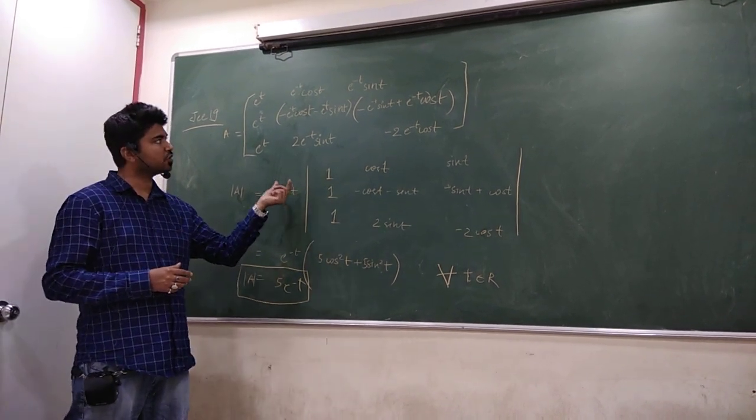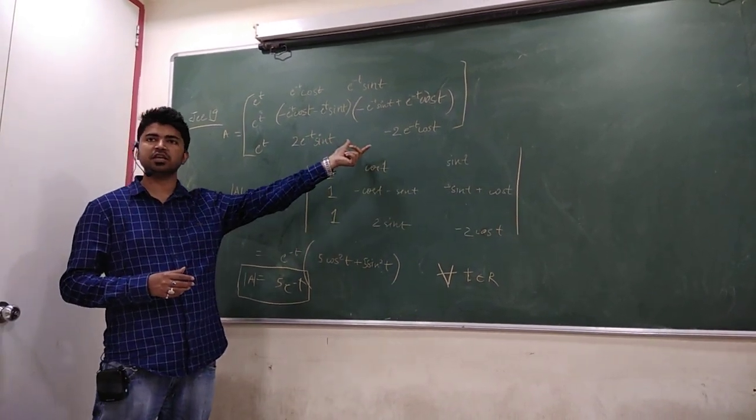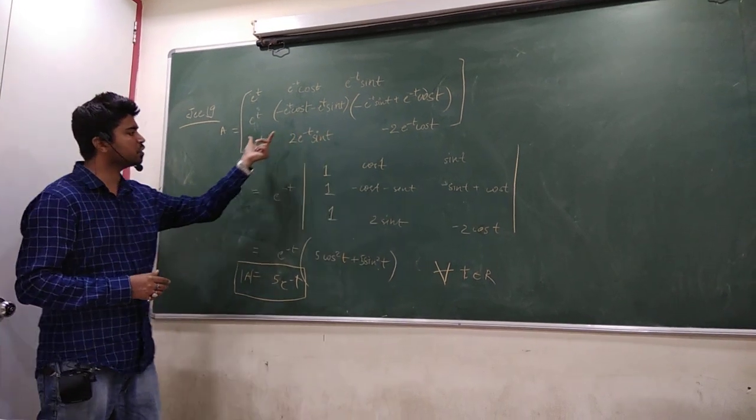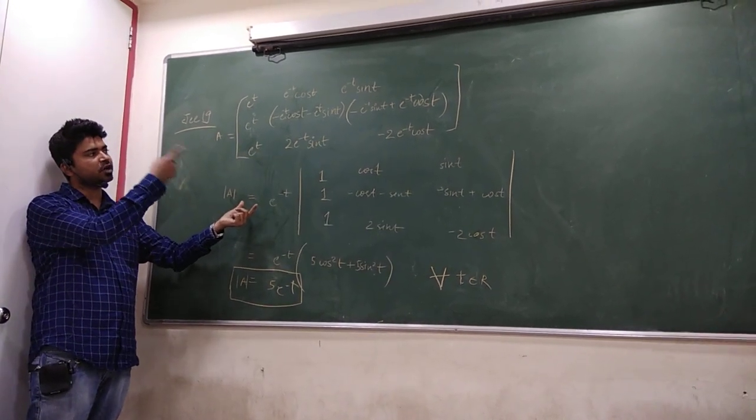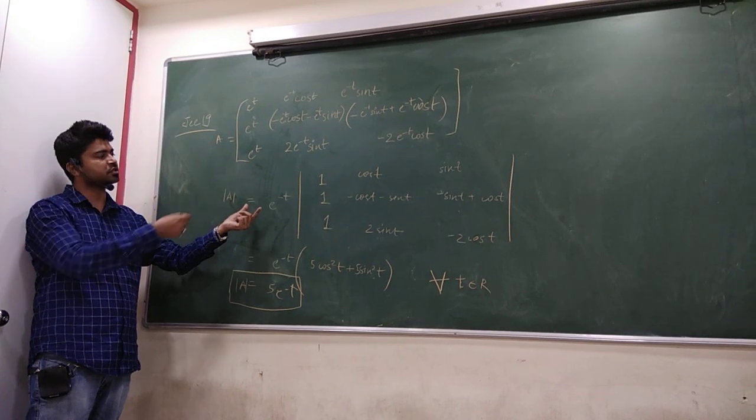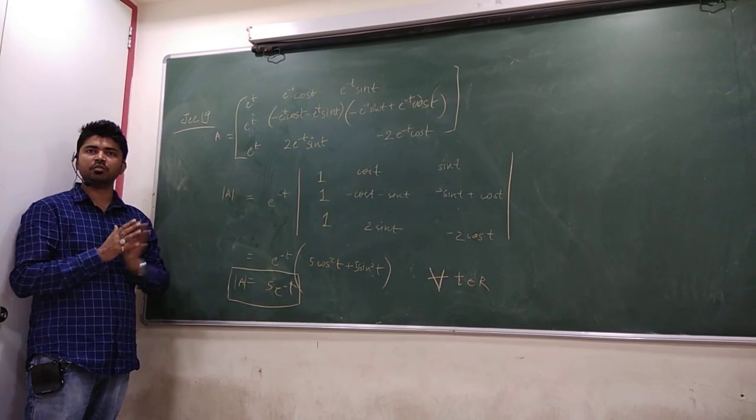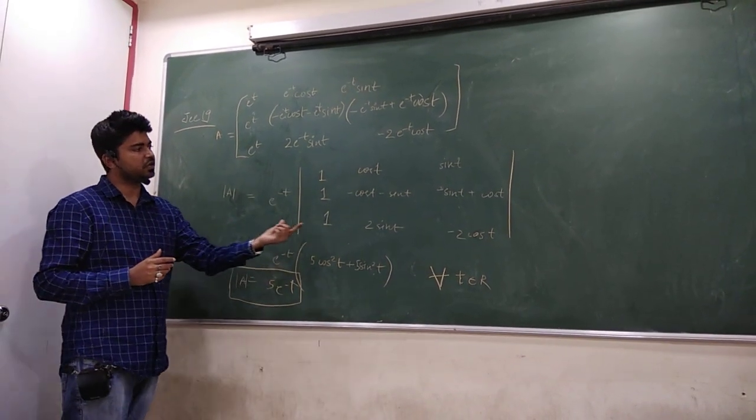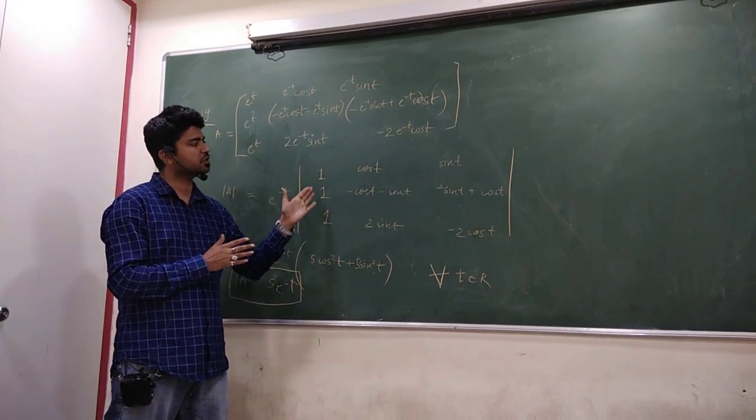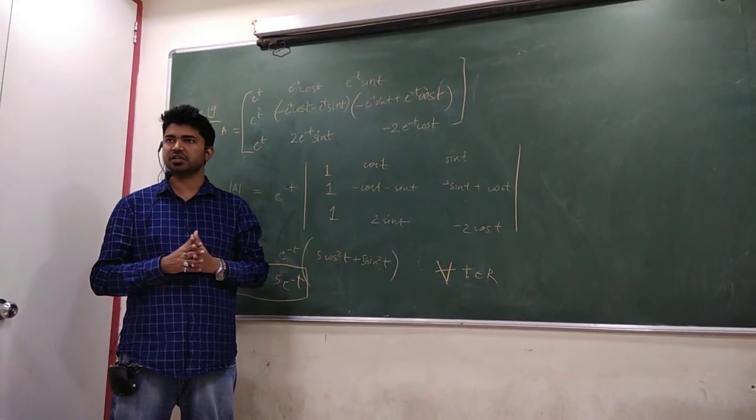So, e ki power minus t, maine common le liya, and again, yaha se e ki power minus t. So, overall, if you see, e ki power t, e ki power minus t, and e ki power minus t. Overall, you are getting e ki power minus t. And here, in the determinant, it is 1 cos t, sin t, and these elements are there.